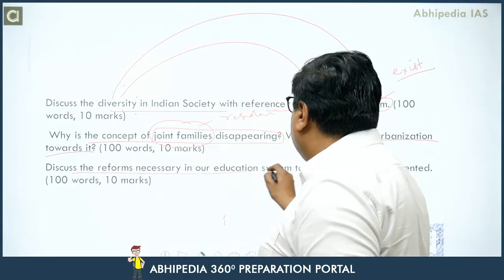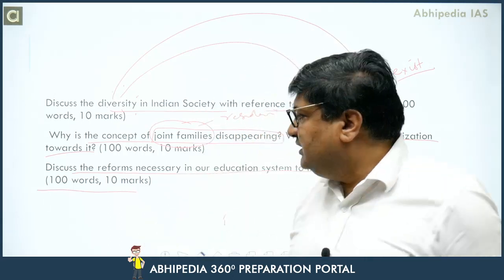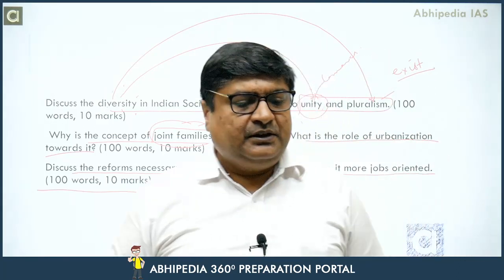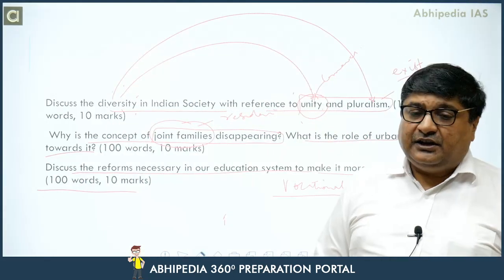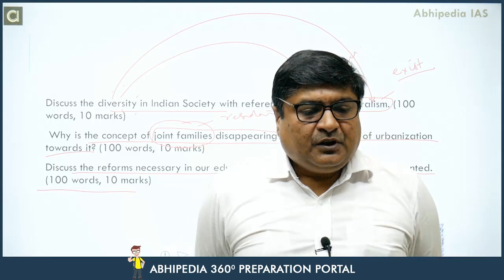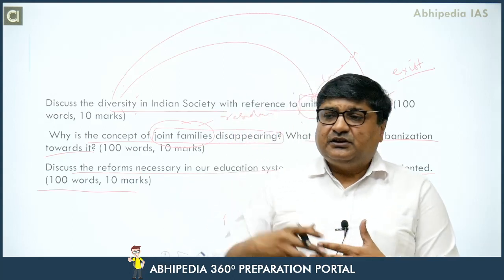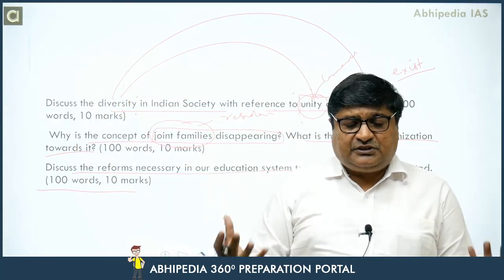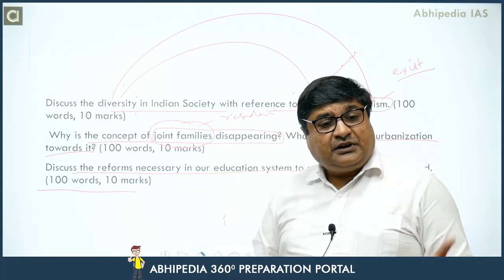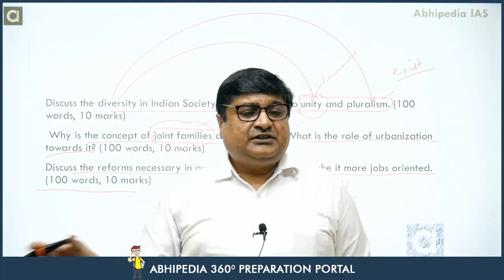Another 2015 education question: discuss the reforms necessary in the education system to make it more job-oriented. The answer involves vocationalization — adding vocational subjects at the plus one and plus two level alongside theoretical subjects, such as dairy farming and solar/renewable energy. At the graduation level, create industry interfaces, internships, training programs, and stress on practical learning to make education more employment-oriented. Any committee recommendations on this topic can add extra depth.